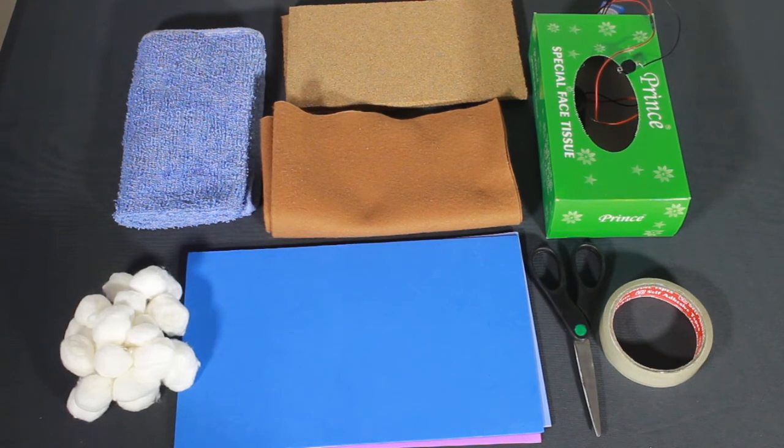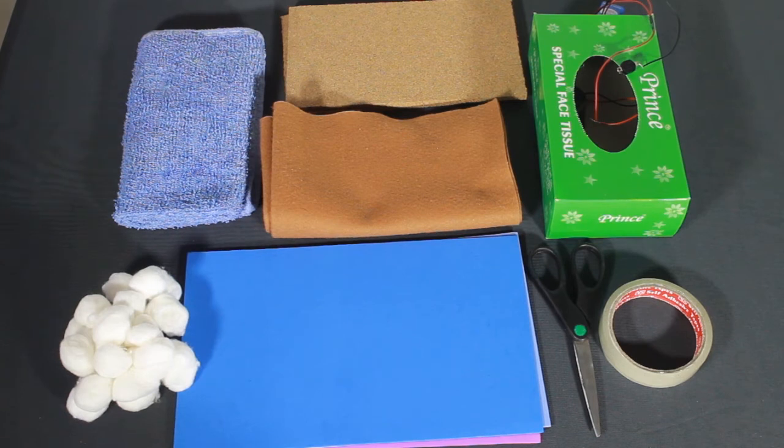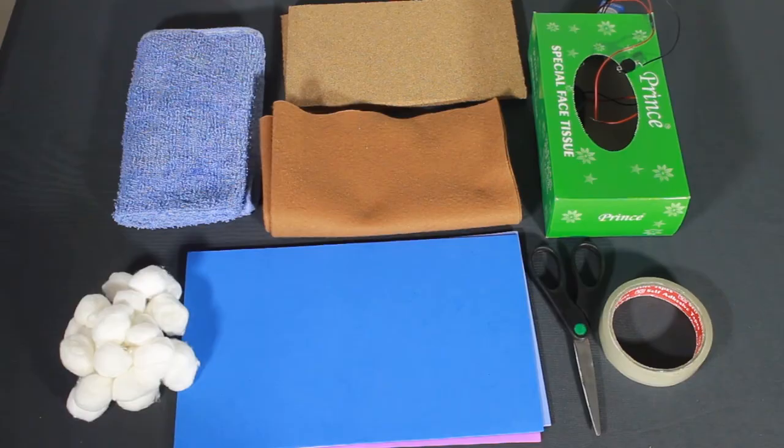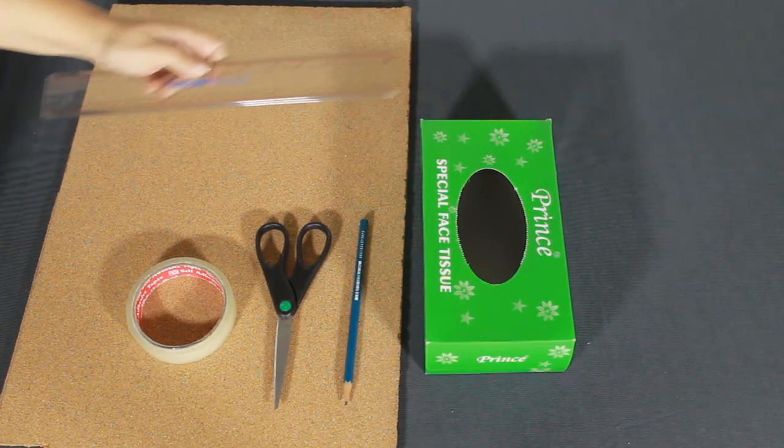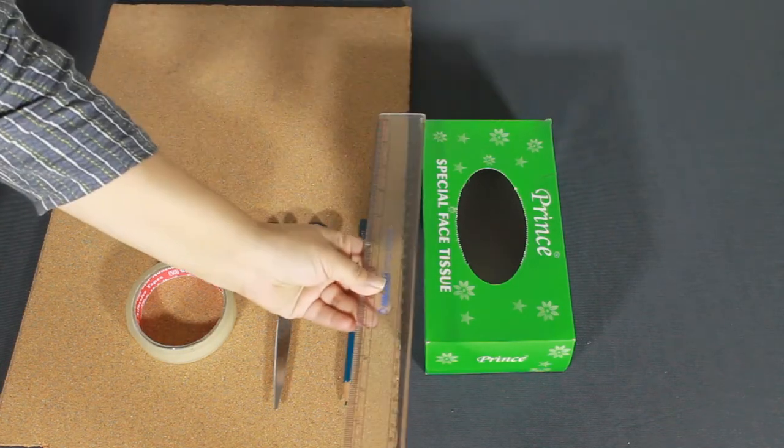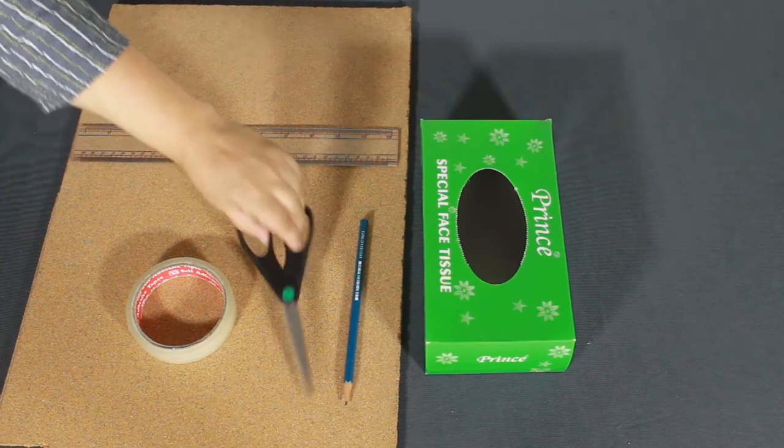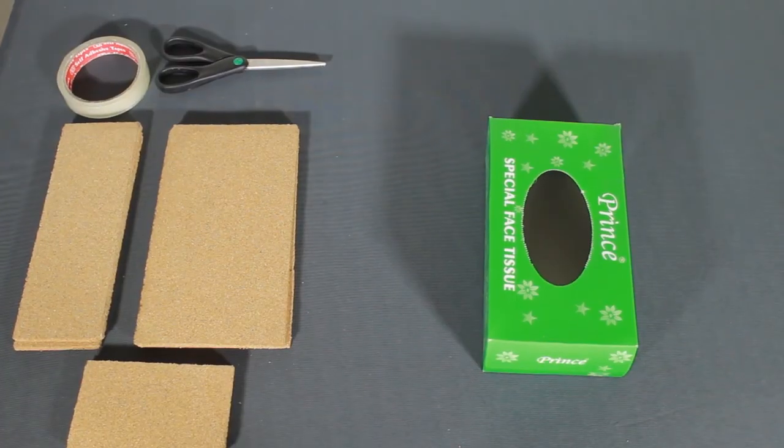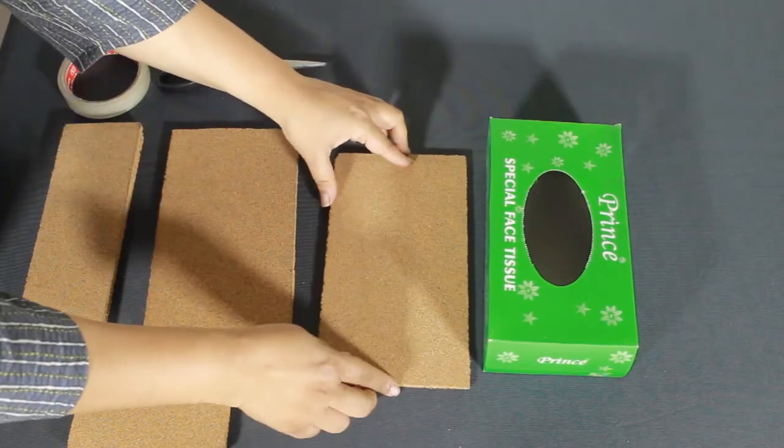We will now wrap some of these materials around our box and see if we can drop the sound decibels to 30 or below. Measure the dimensions, width, height, and length of the tissue box. Cut the first layer of cork board slightly more than the tissue box. Stick these cork sheets around the box with tape.